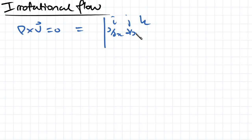partial dx, partial dy and partial dz, and then on the bottom row here we've got u, v, w. So this produces the cross product between nabla and the velocity vector.